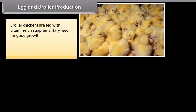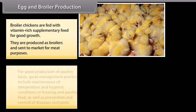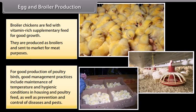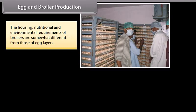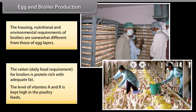Broiler chickens are fed with vitamin-rich supplementary feed for good growth. They are produced as broilers and sent to market for meat purposes. For good production of poultry birds, good management practices include maintenance of temperature and hygienic conditions in housing, proper poultry feed, and prevention and control of diseases and pests. The housing, nutritional and environmental requirements of broilers are somewhat different from those of egg layers. The daily ration for broilers is protein-rich with adequate fat, and the levels of vitamins A and K are kept high in the poultry feeds.